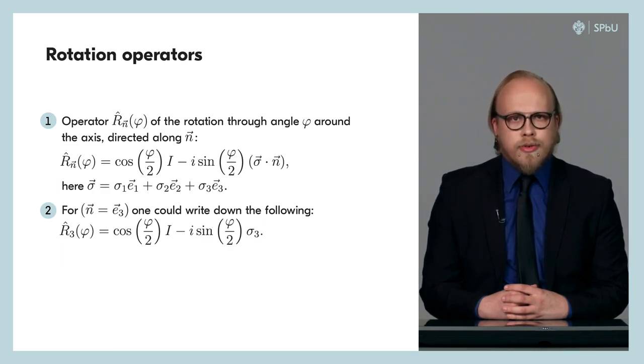Thus, the rotation operator is equal to the difference of the unit matrix multiplied by the cosine φ/2 and the scalar product of the sigma vector and the vector n multiplied by i sine φ/2. For example, for a rotation operator at an angle φ/2 around the ort e₃, we obtain the difference of the unit matrix by the cosine φ/2 and the Pauli matrix of the σ₃ by i sine φ/2, where i is the complex unit.